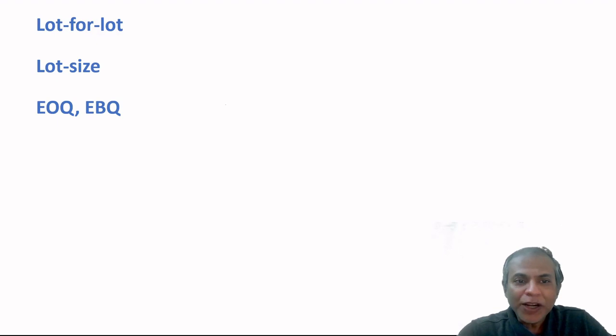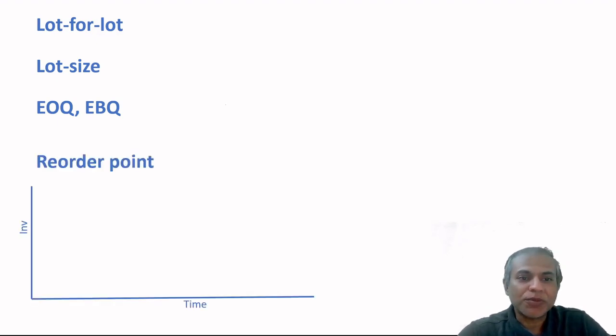For when to order, we have two systems: reorder point systems. The y-axis gives us inventory, x-axis gives us time. The first thing we do is fix up a reorder point. Assume we're in a perfect world and I'm three days away from my supplier, so the moment I order, my supplier will send the goods to me in three days.